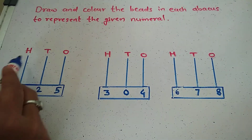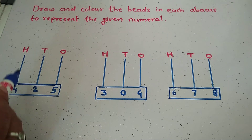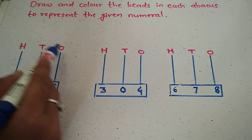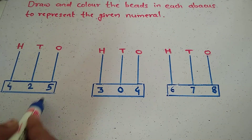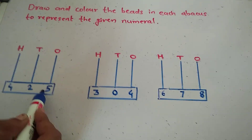See the abacus. There are three rows: hundreds, tens, and ones. First, in the ones place.